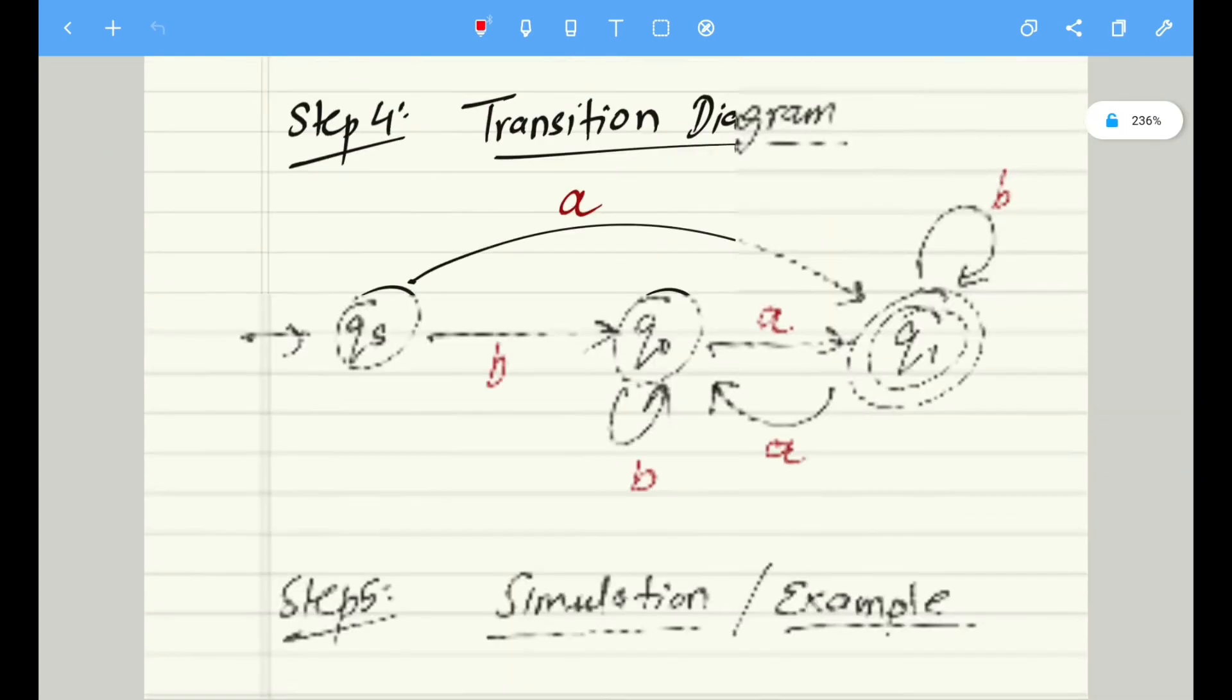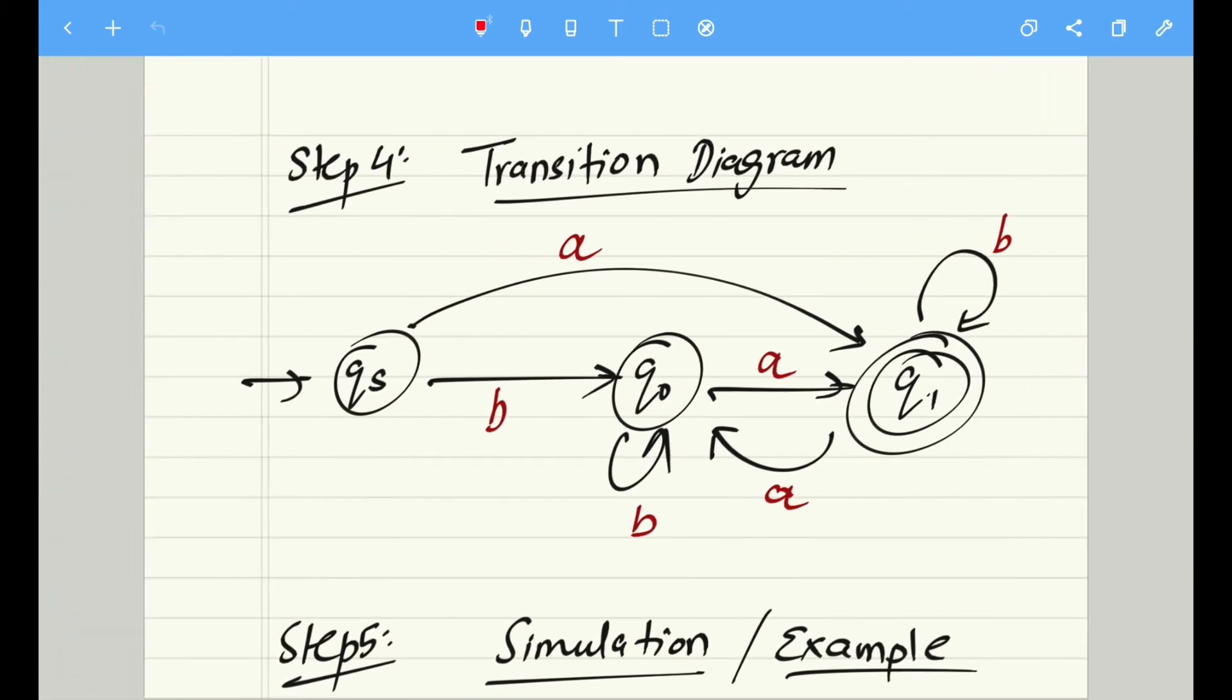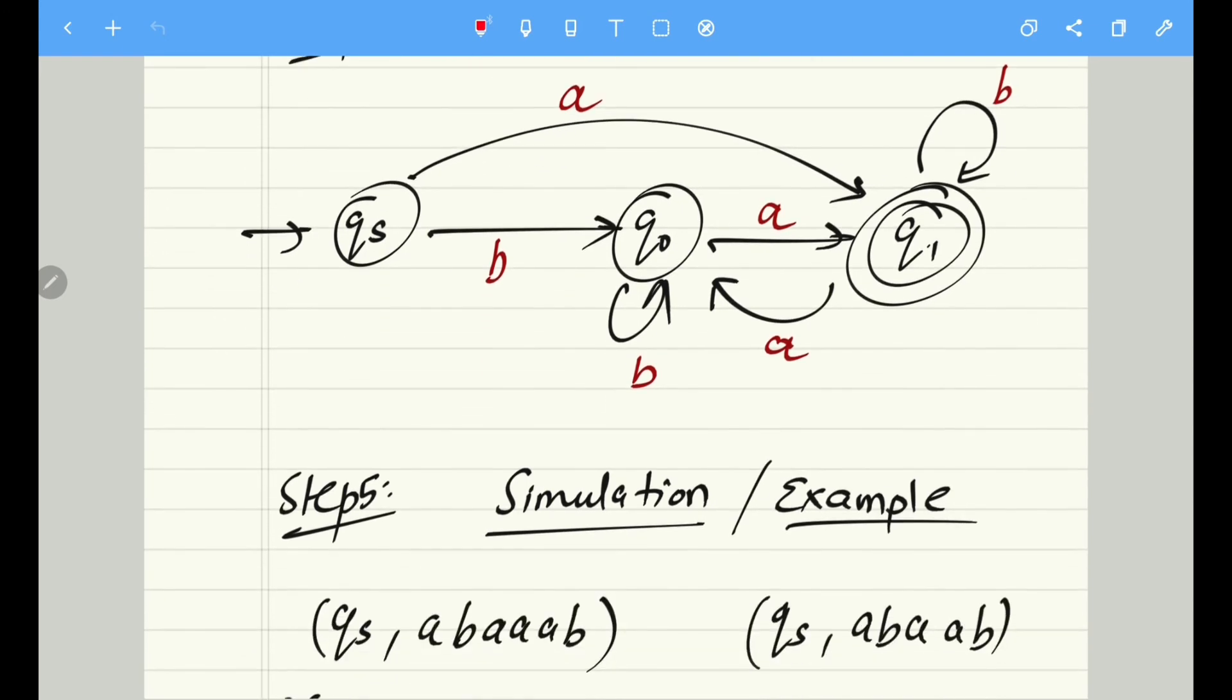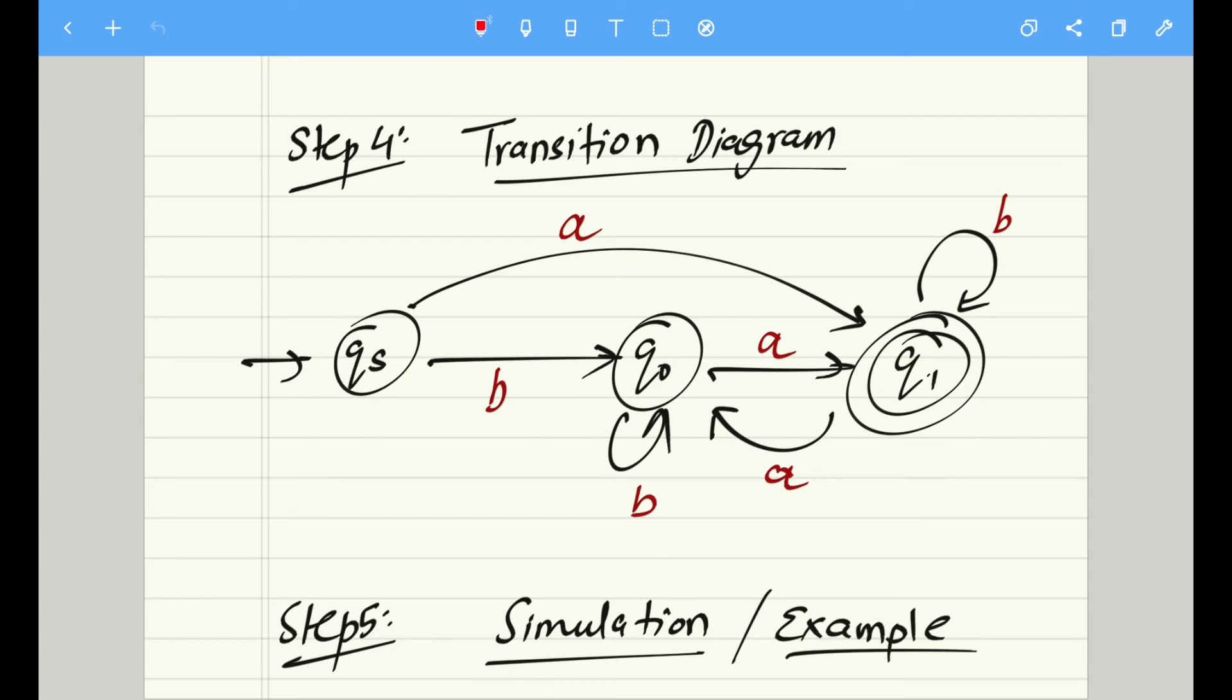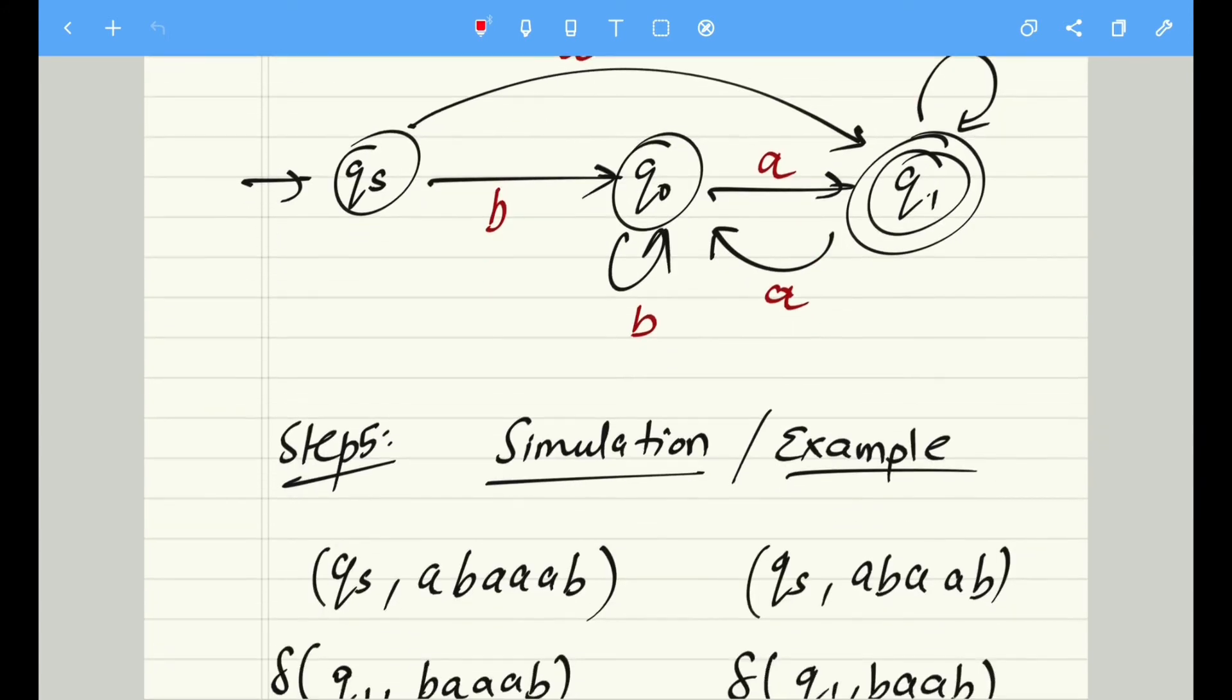The transition diagram is very simple. You can see it only consists of three states. q1 is my final state. From qs on input a we go to q1. On qs on input b we go to q0. In the similar fashion, q0 on input a goes to q1, and q0 on input b goes to q0 only. In the same way we can complete the entire diagram. If you are clear with the transition table, there is no difficulty you are going to face while creating the transition diagram. The only thing is the structure of the transition diagram can vary. I can draw it in a different way, you can draw it in a different way. It doesn't matter.